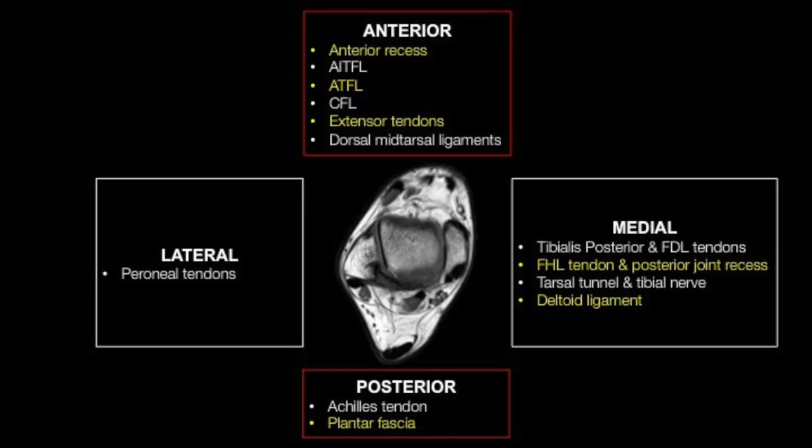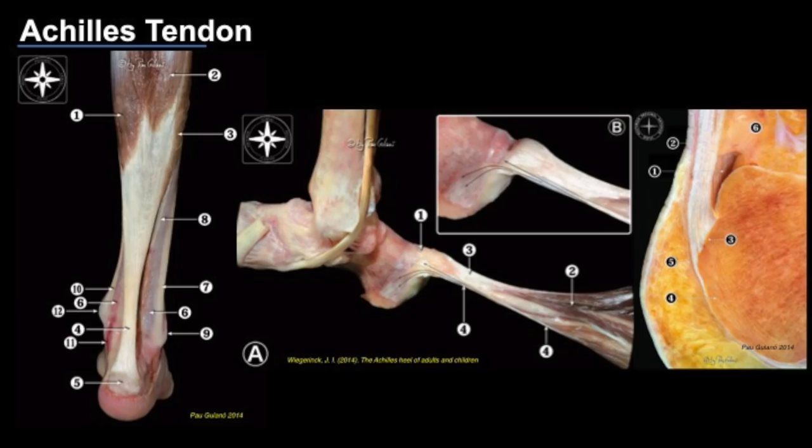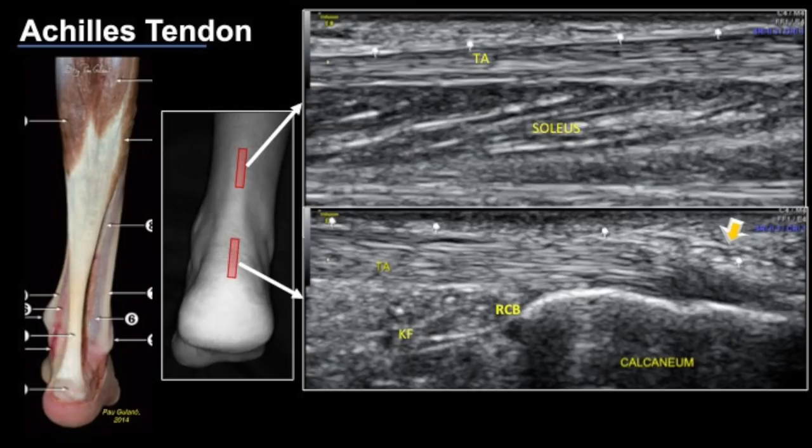Let's begin with the posterior ankle, where we will be assessing the Achilles tendon and the plantar fascia. The plantar fascia is not technically part of the ankle joint, however there are quite a few referrals for its assessment, hence we've included it in the posterior quadrant. The Achilles tendon is a long, strong, and broad tendon formed by the triceps surae — that is the medial and lateral heads of the gastrocnemius and the soleus.